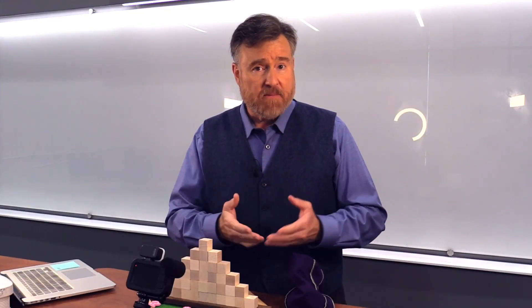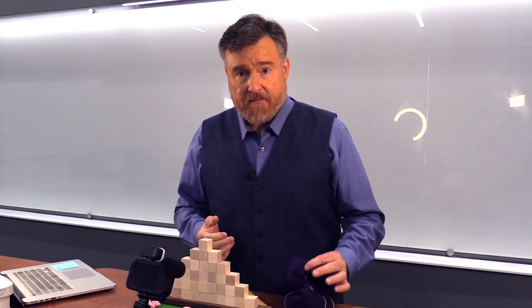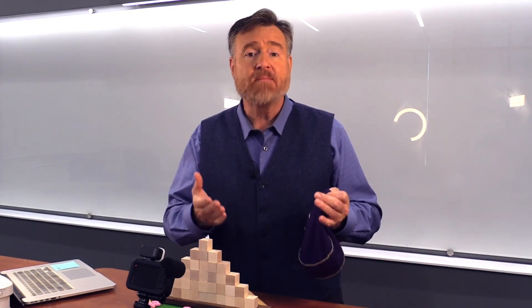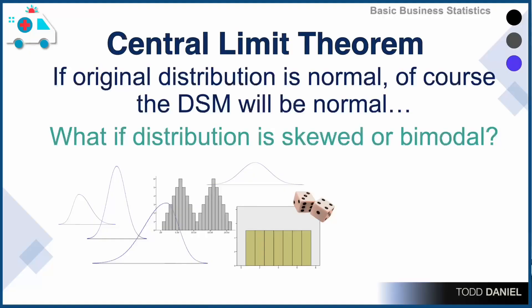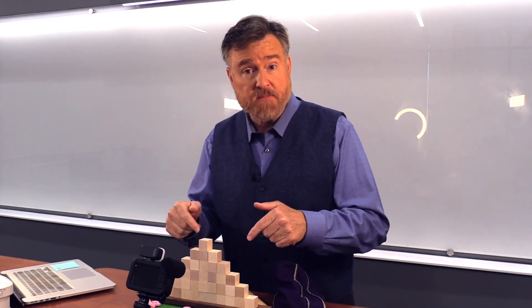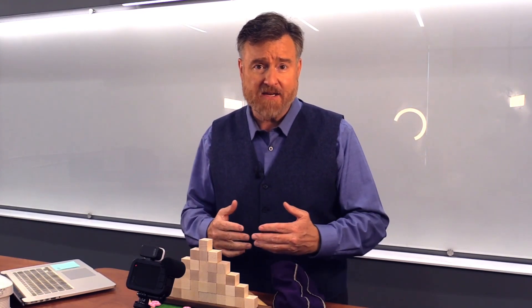But that is not the case. What would my distribution of sample means look like if my infinite population was bimodal, or if it was positively skewed, or if it was a rectangular or uniform distribution? Would the distribution of sample means likewise be skewed or rectangular?